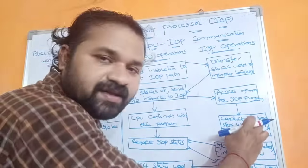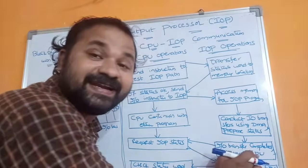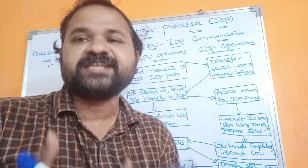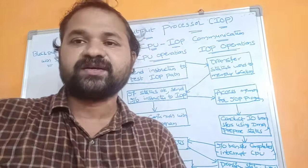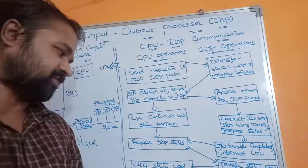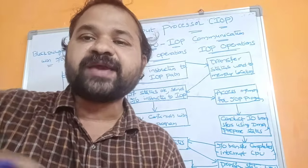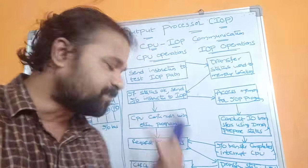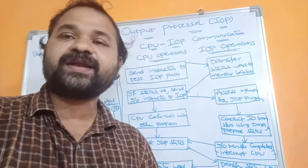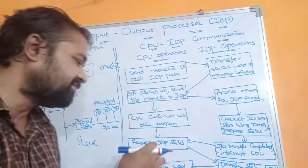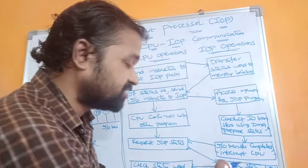Once the I/O program execution is over, the I/O transfer is completed and the I/O processor interrupts the CPU by sending an interrupt signal. Once the CPU receives the interrupt signal, it checks whether the I/O program execution was successfully completed or not. For that purpose, it requests the I/O processor status and sends a request accordingly.